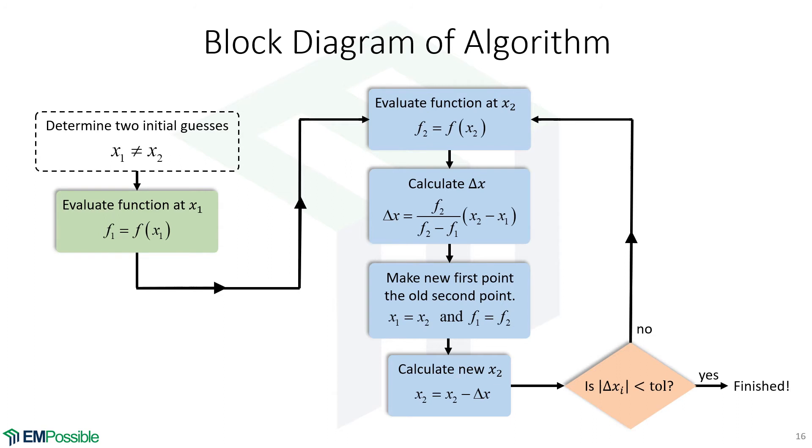If it does fall below that tolerance, we'll say that we're finished. And that's it. That is the secant method.